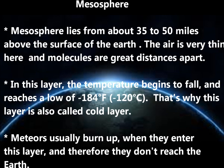The Mesosphere lies from about 35–50 miles above the surface of the Earth. The air is very thin here and molecules are great distances apart. In this layer, the temperature begins to fall and reaches a low of minus 184 degrees F (minus 120 degrees C).